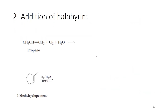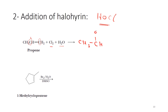Now let's look at the second reaction that follows Markovnikov's rule: the addition of halohydrin. By halohydrin we mean HOCl or HOBr. If I start with propene, the addition of the chlorine atom happens to the carbon carrying the largest number of hydrogens, and the addition of the hydroxyl group happens to the carbon carrying the least number of hydrogens. So the hydroxyl is added to the less-substituted carbon and the halogen to the more-substituted carbon.